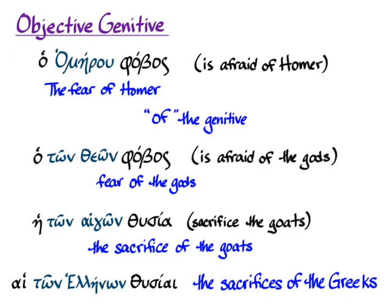Grammarians love to categorize every single thing that a different case can do, and very often that's hugely useful to understand what's going on in a sentence. With these two genitives, though, you really only need to know that 'of' is going to work as your default translation, and context will help tell you the relationship of the genitive noun to the noun that's not in the genitive.